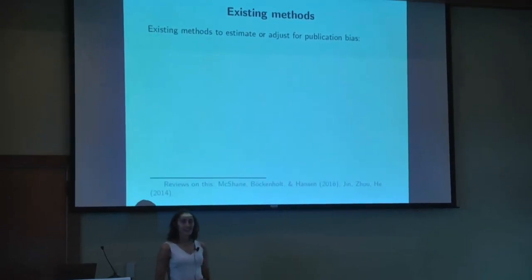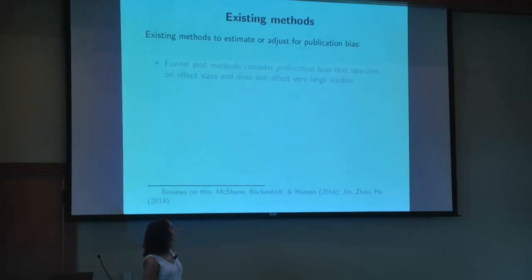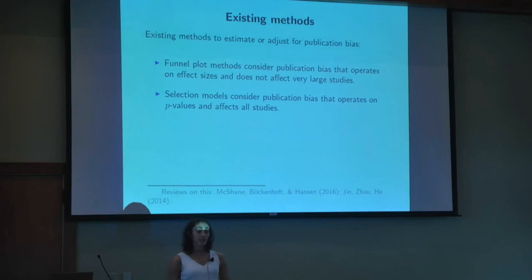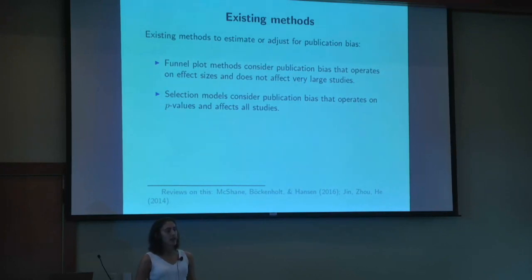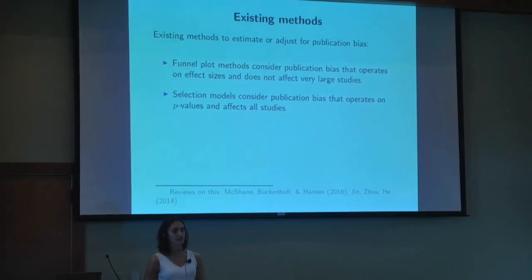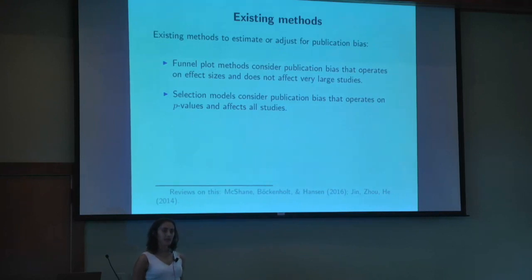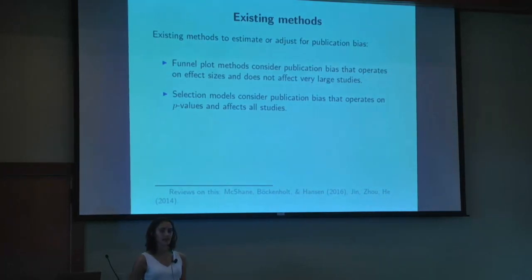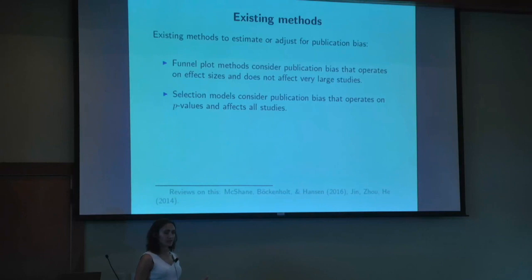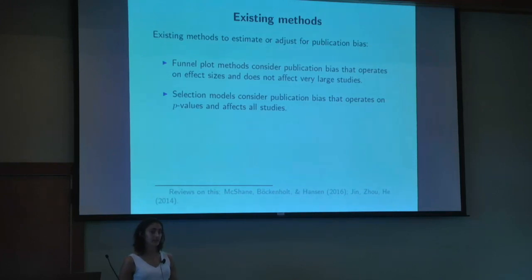There are a lot of methods out there for publication bias — why add another one? Existing methods typically fall into two broad categories. First, there are funnel plot-based methods including trim-and-fill, Egger's regression, and the various flavors of PET-PEESE. These generally assume publication bias operates on effect sizes and doesn't affect the largest studies. The empirical evidence suggests a more realistic assumption is that publication bias operates on the significance of p-values, not the effect sizes per se.